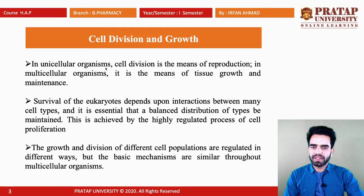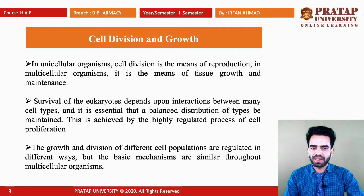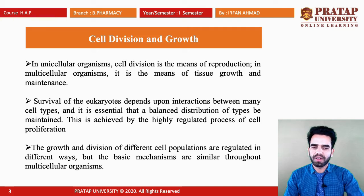Eukaryotes' survival depends upon interactions between many cell types, and it is essential that there must be a balanced distribution, which is maintained by regulating the process of cell proliferation. The growth and division of different cell populations is regulated in different ways, and basic mechanisms are followed which are similar throughout all multicellular organisms.